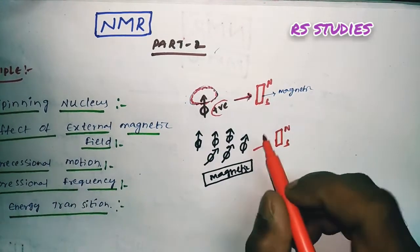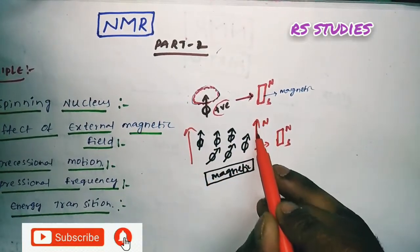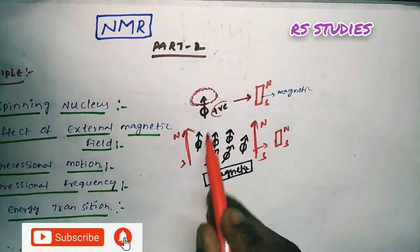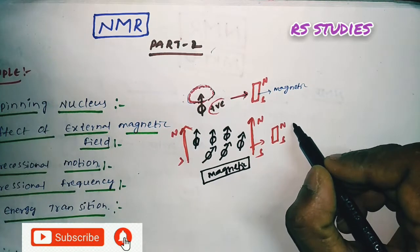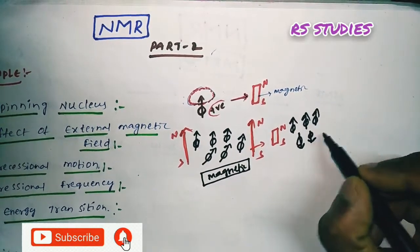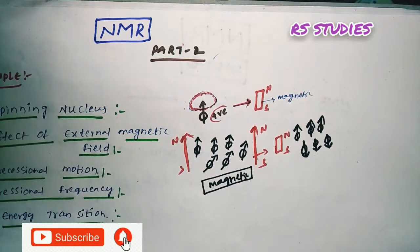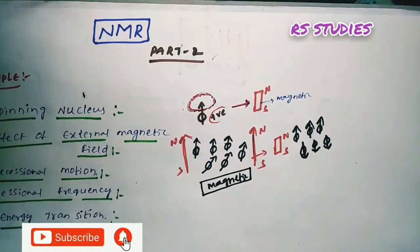The protons can align north-south, up or down. When an external magnetic field is applied, some protons align in the same direction as the field (parallel), and some protons align in the opposite direction (anti-parallel). This is the effect of the external magnetic field.